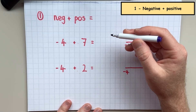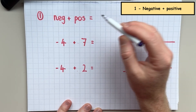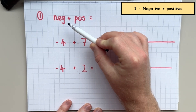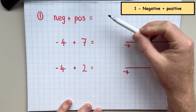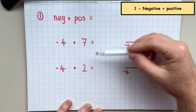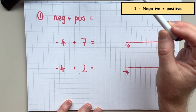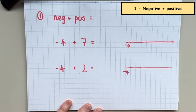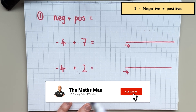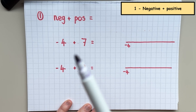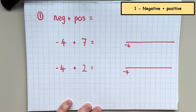So in the first section of this video we're going to investigate what happens when you have a negative number and you add a positive number to it. We're going to work through two examples. If you'd like to receive weekly videos from the Mathsman, don't forget to hit the subscribe button. I am a fully qualified primary school teacher. Anyway, let's get straight to it.